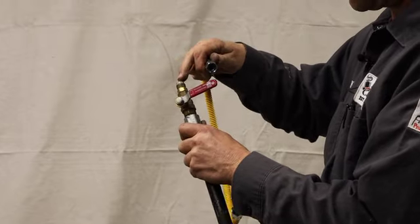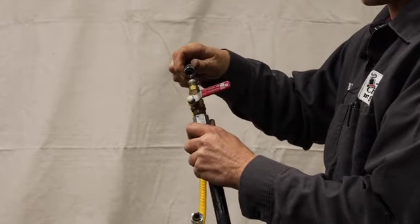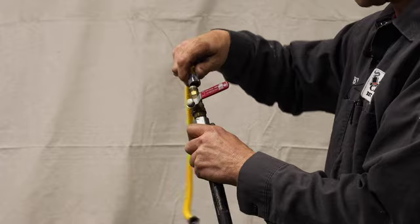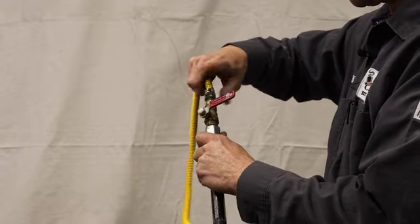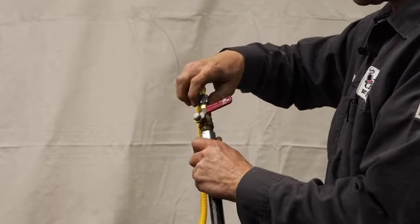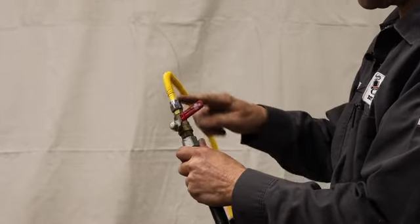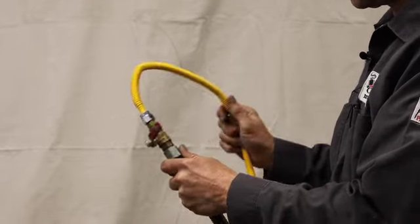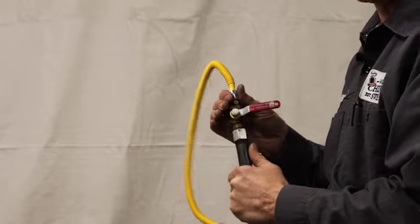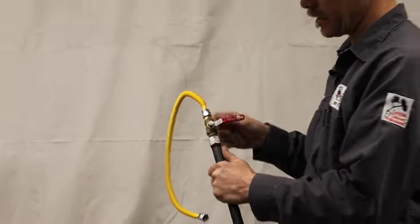We've got a compression fitting on the end, usually always brass, and we have a compression gas flex that will go on there safely. No thread sealant is to be used on compression. So whenever you're using a compression fitting, these beautiful yellow flex lines, do not use any type of thread sealant.